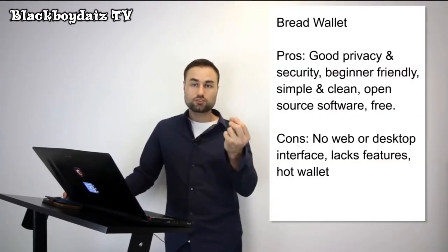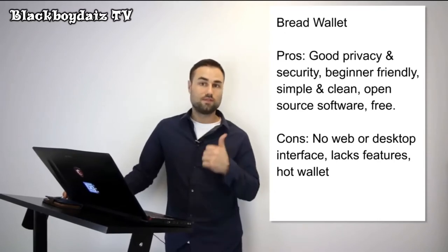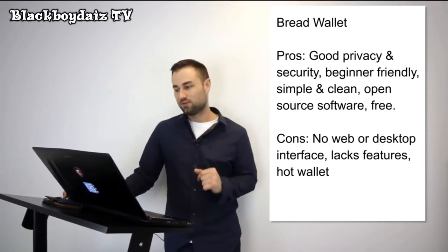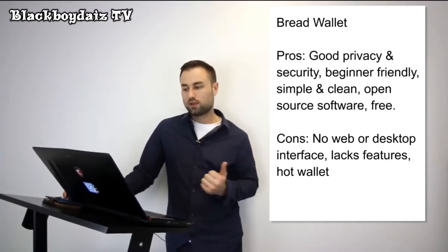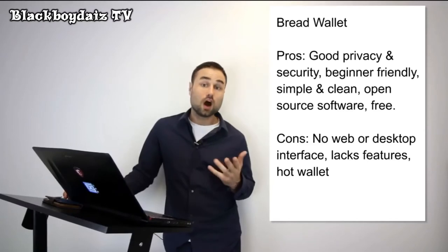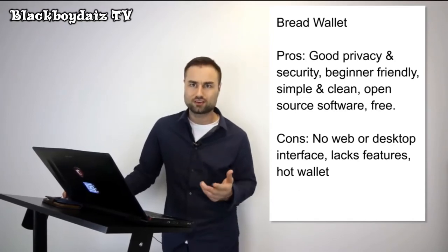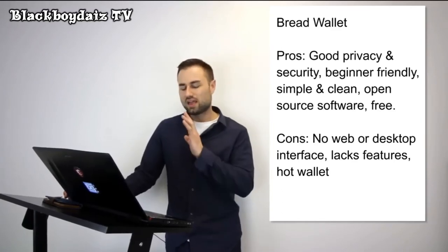The first recommendation is the Bread Wallet — a simple wallet that's literally made for a child, the user interface is so simple. It's specifically just for Bitcoin. The pros are great privacy, beginner friendly, open source, free, simple, and clean. The cons are no web interface, no desktop interface, it lacks features, and it's a hot wallet so it has less security. But if you're looking for day-to-day Bitcoin transactions — maybe keep around $500 in there — a Bread Wallet is a great start for beginners.